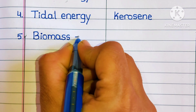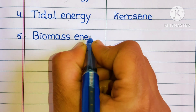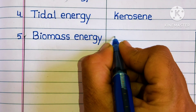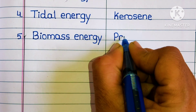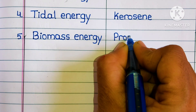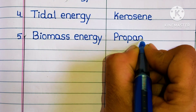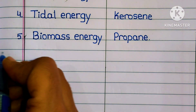Fifth one: biomass energy is a renewable resource. And non-renewable resource is propane.